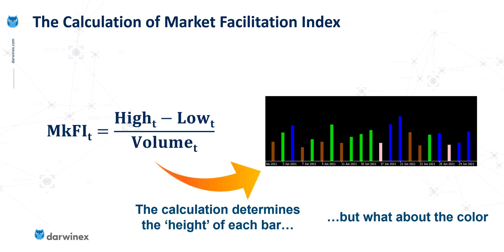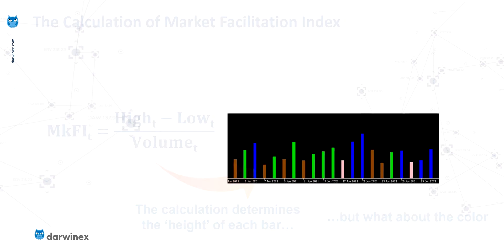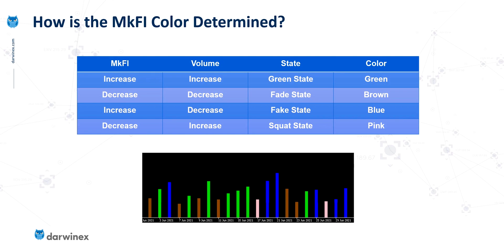So what is it that determines the colour of the bar? For this we have to look at the combination of two factors. The first is the change in the MKFI value itself — has the current bar increased or decreased from the previous bar? The second factor is the volume itself, which we look at independently to consider whether volume has increased or decreased from the previous bar. That gives us four different combinations, determining whether we see a green, brown, blue, or pink bar — representing the states known as green, fade, fake, and squat.